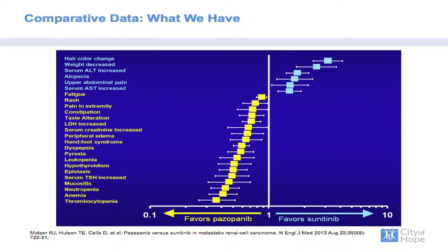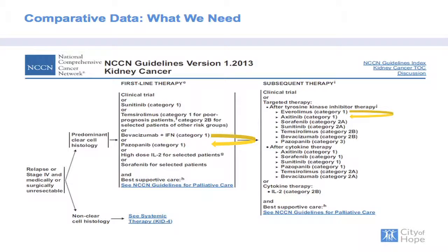I find this data somewhat useful for counseling patients day-to-day in the clinic. What we need — per the NCCN guidelines — are trials that address relevant comparisons we face clinically. For instance, in the first-line setting we don't have toxicity data putting pazopanib and bevacizumab side-by-side in Phase III trials. And perhaps more pressing, we don't have comparisons in the second-line setting between axitinib and everolimus, a decision we still struggle with.